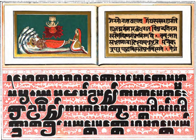A slightly freer translation by Acharya Buddharakita reads: 'Mind precedes all mental states. Mind is their chief; they are all mind-wrought. If with an impure mind a person speaks or acts, suffering follows him like the wheel that follows the foot of the ox.'